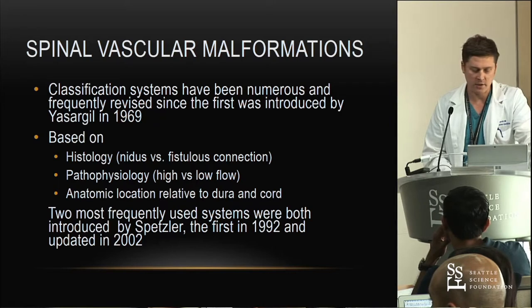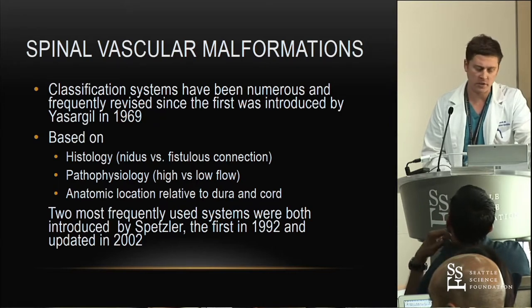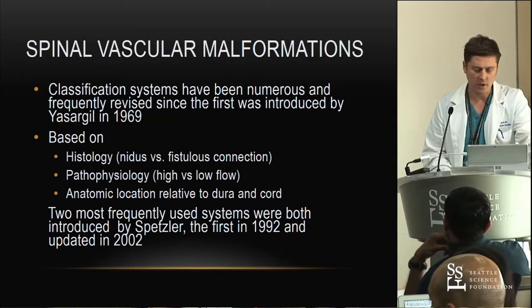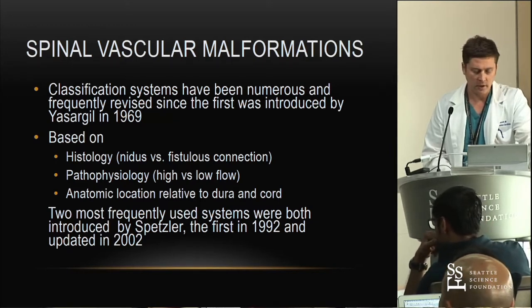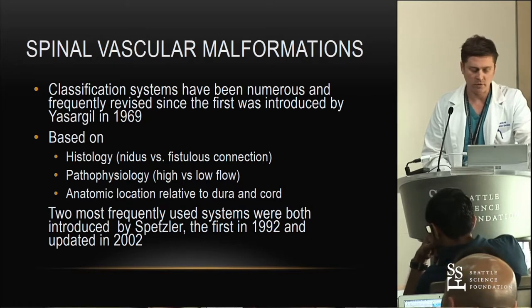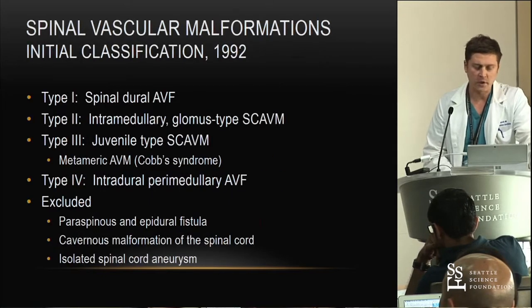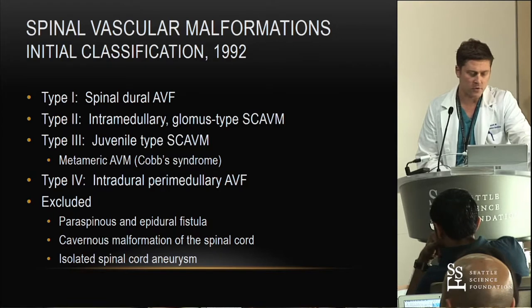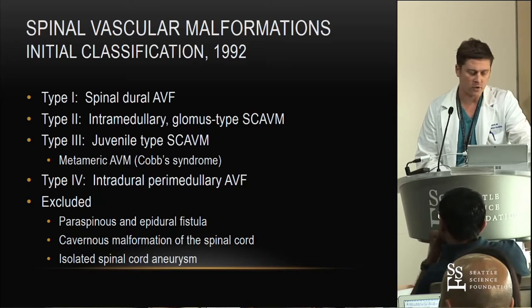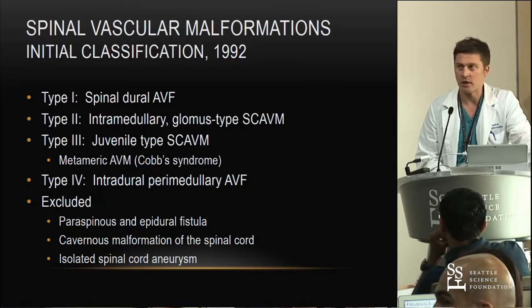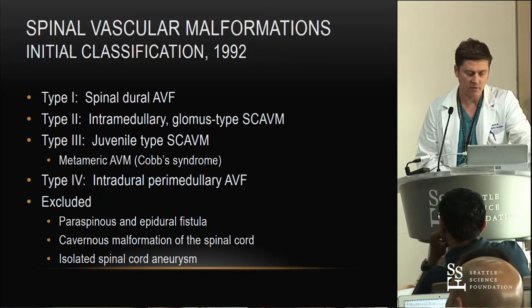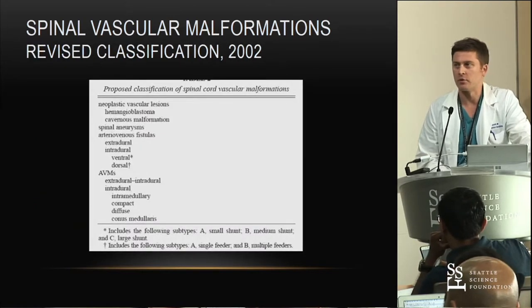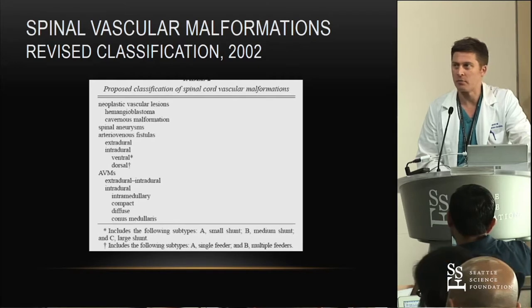There are various classification systems that have been used — Yastigal started in 1969 — based on different things: histology, pathophysiology, or anatomic locations. The two most popular were introduced by Spitzer in 1992 and revised in 2002. This is the one I understand because it only goes to four: type 1s are spinal dural AV fistulas; type 2s are the intramedullary or glomus-type AVMs; type 3s are the rarer juvenile type; and type 4s are the intradural perimedullary AVFs. Some others are re-included in the 2002 classification.